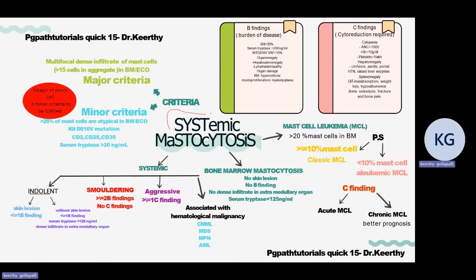For systemic mastocytosis, you need to fulfill certain criteria: one major criterion, or one major plus one minor, or three minor criteria. The major criterion is multifocal dense infiltrates of mast cell aggregates — more than 15 mast cells per aggregate — involving the bone marrow or any extracutaneous organ.